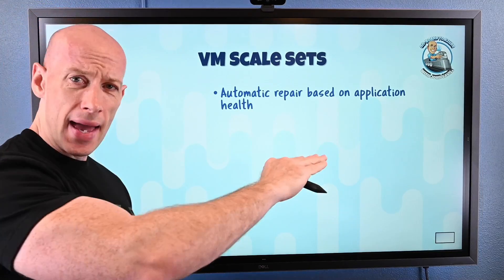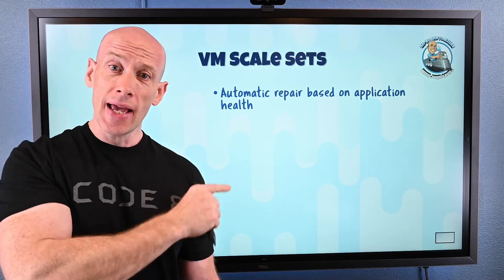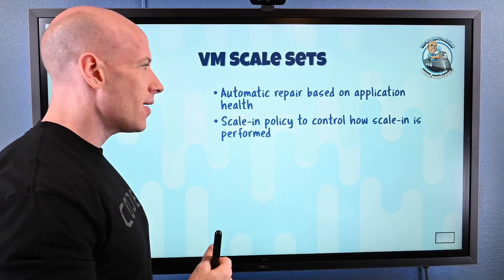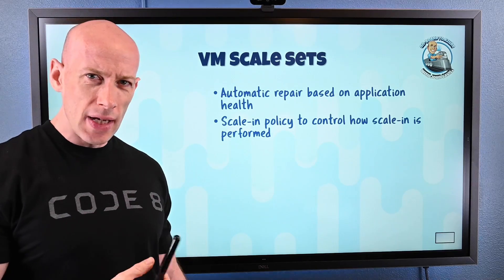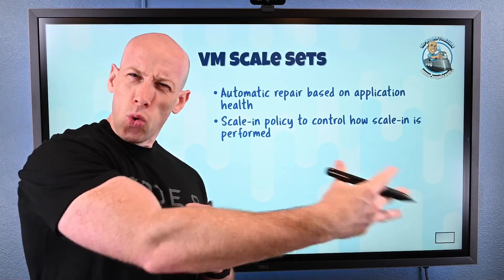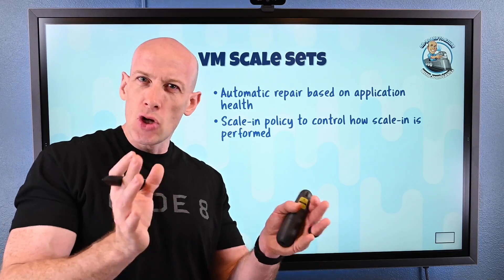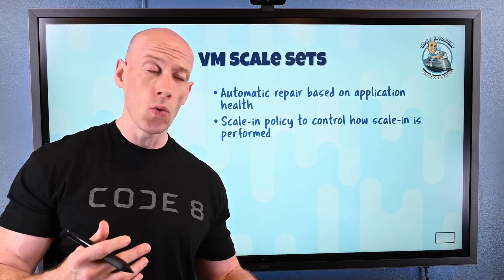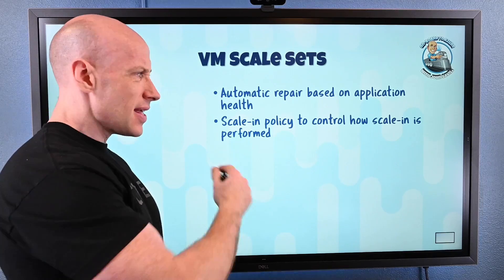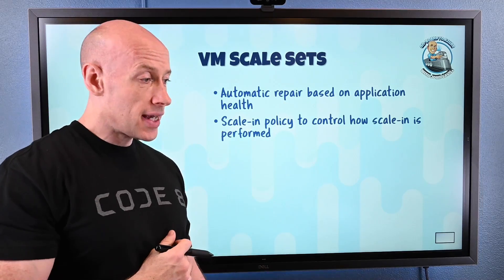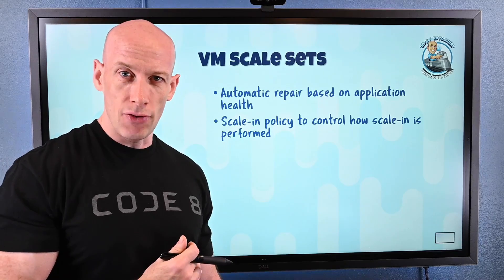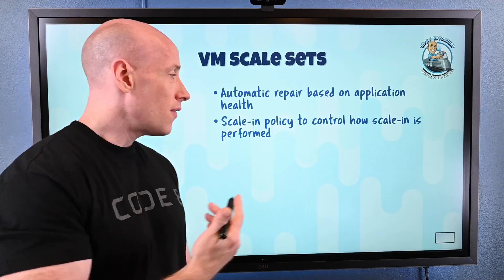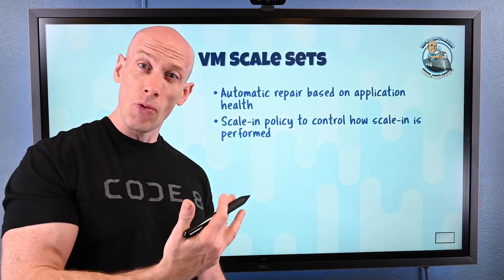Automatic repair based on application health is now available. There are also scaling policies to control how scaling is actually performed. When you hit a quieter time — based on maybe a CPU metric falling below a certain average, or a schedule — you can now say: use default scaling, or the newest VM gets scaled in first, or the oldest VM gets scaled in first. You now have control over how those scale-in operations are actually performed.